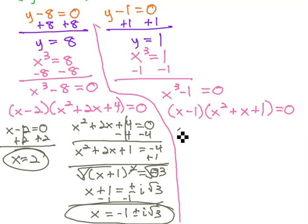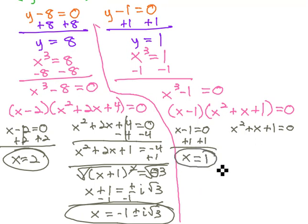And again, we can set the x minus 1 equal to 0 and the x squared plus x plus 1 equal to 0. Adding 1 to both sides, we get our fourth solution, that x is equal to positive 1.